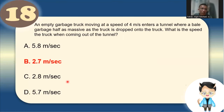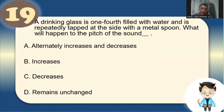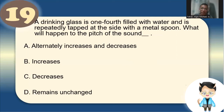Number 19: A drinking glass is one-fourth filled with water and repeatedly tapped at the side with a metal spoon, then more water is added continuously. What happens to the pitch of the sound? The pitch will decrease as more water is added.